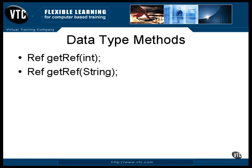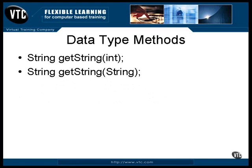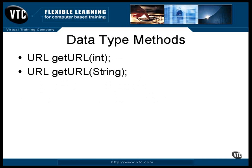These methods return a Java object that is an implementation of an SQL ref, which is a reference to an SQL structured type in the database. An SQL ref object simply contains the information necessary to be a logical pointer to the real value, which is in the database. These methods return the value as a Java string object, and these methods convert the data item in the database to a URL object and return it.